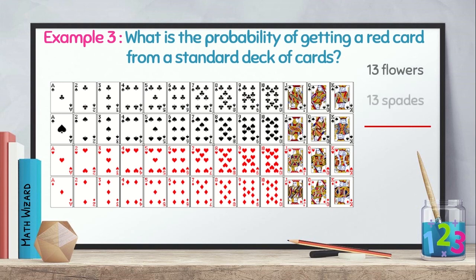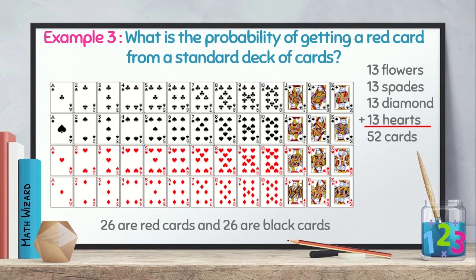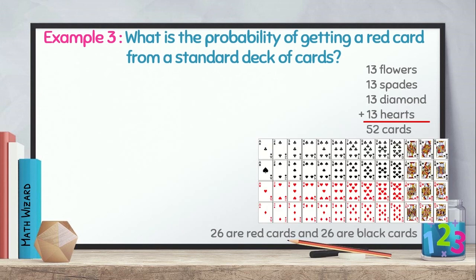We have 13 flowers, which are black, 13 spades, which are black, 13 diamonds, which are red, 13 hearts, which are red. So, a total of 52 cards. A standard deck of cards is composed of 52 cards. 26 are red cards, and 26 are black cards. We have 4 kings, 4 queen, 4 jack, 4 ace, and so on.